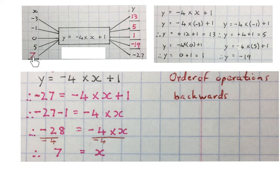Then we can check it. Seven. I can put it in the place of X. So minus four times seven is minus twenty-eight. Minus twenty-eight plus one is minus twenty-seven. Please stop the video and get your brain around this.